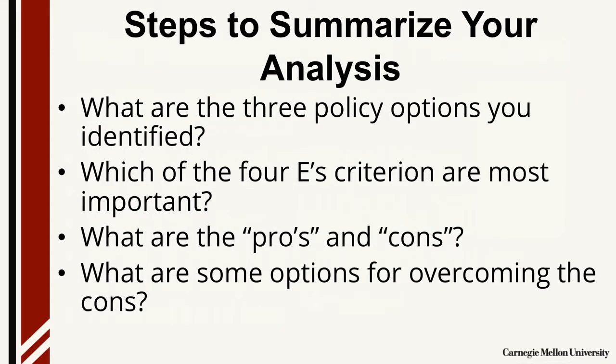In writing the summary of your analysis, you need to go through the following steps: identify what are the three policy options you identified; which of the four E's criteria, if any, are most important in addressing your problem — as a reminder, those are effectiveness, efficiency, equity, and ease of political acceptability, all described in an earlier video. Third, what are the pros and cons associated with the four E's for both the policy you're recommending and the ones you did not recommend? And finally, what are some options for overcoming the cons for the policy options you did select?